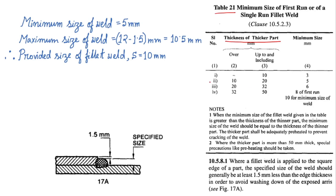So in this table, we have to consider serial number 2 as our plate is 12 mm. So for 12 mm plate, the minimum size of the weld is 5 mm.